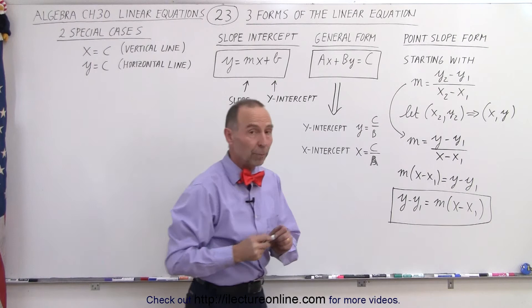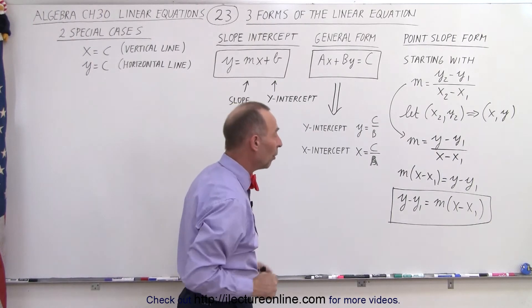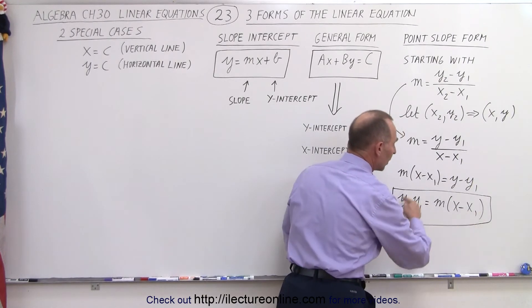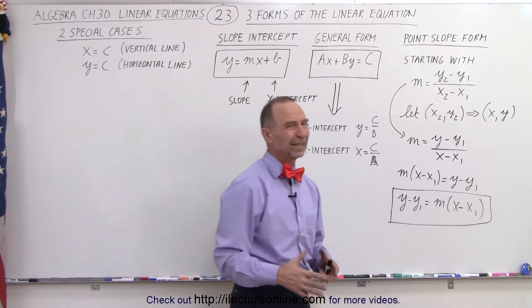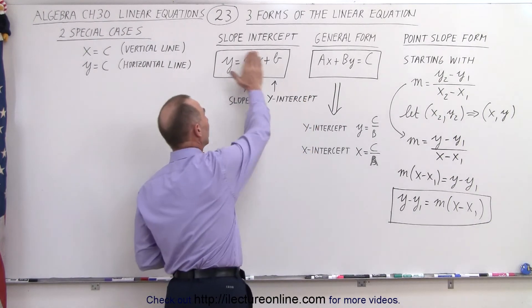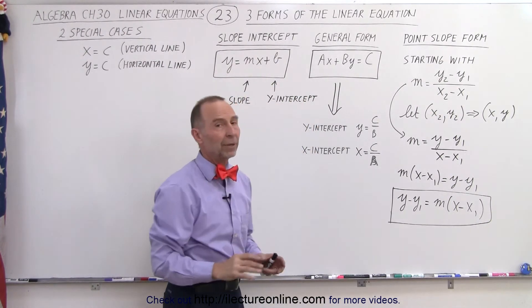Why do we call it the point-slope form? Well, when we have an equation in this form, all we need is the slope and one point on the line to come up with an equation in this form. In actuality, it is nice to have that, but this really takes care of every possible combination we can come up with.